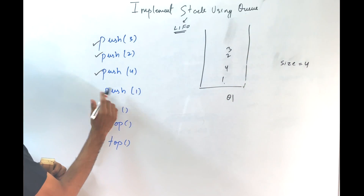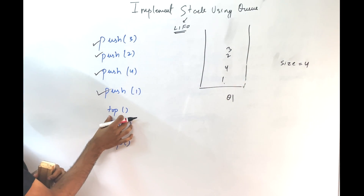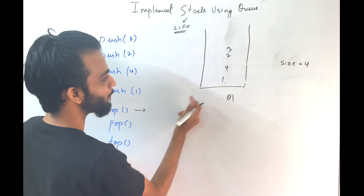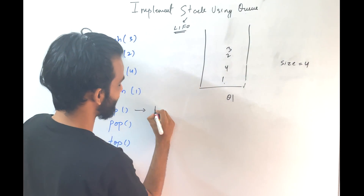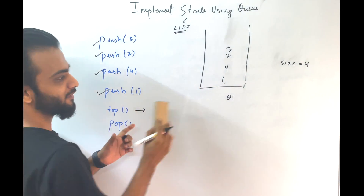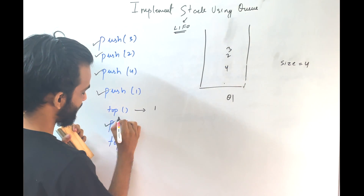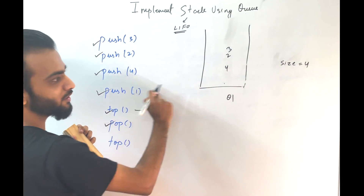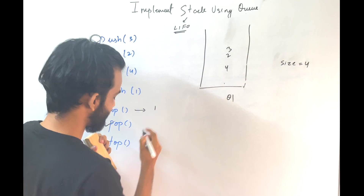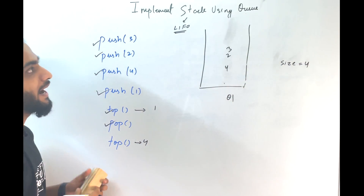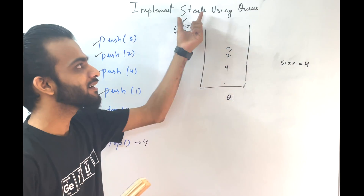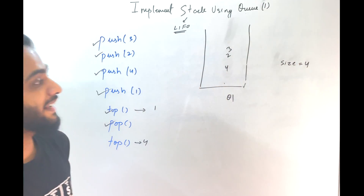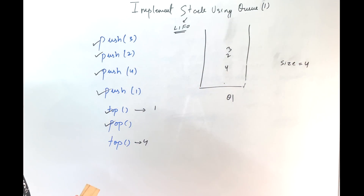Push of 1 is done. If I ask you the topmost, ideally it should be 1. Is it? Yes — if you do queue.top, that's 1. If I ask pop, pop it. Next if I ask top — ideally before 1 it's 4, so it should be 4. Yes, it is. So I can also implement a stack using a single queue.